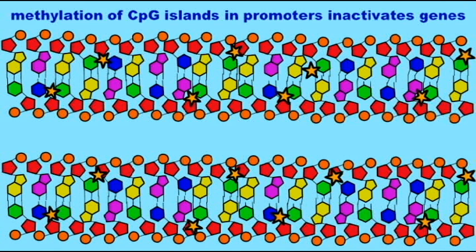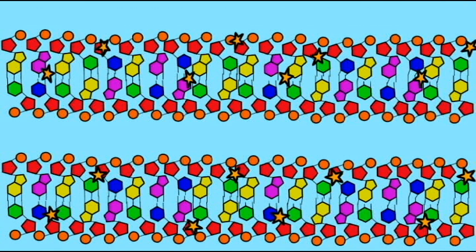About 70% of genes possess these CpG islands in or near their promoters.